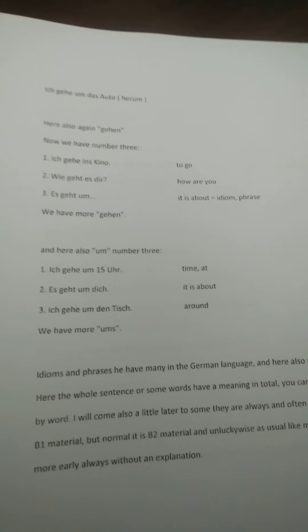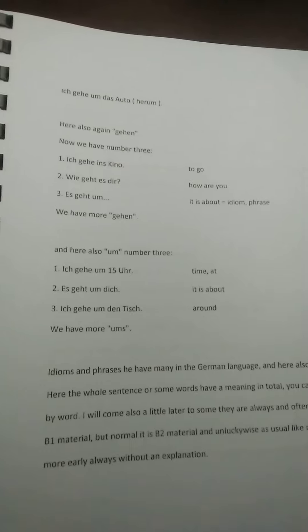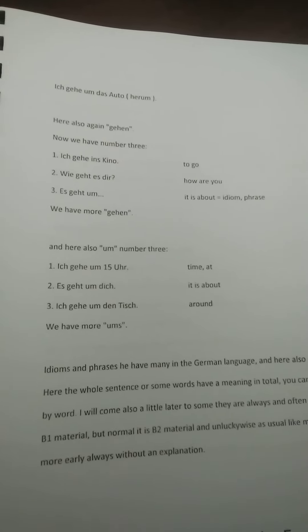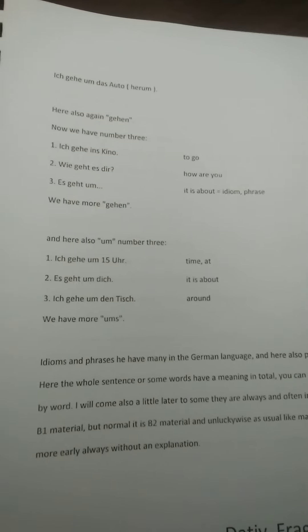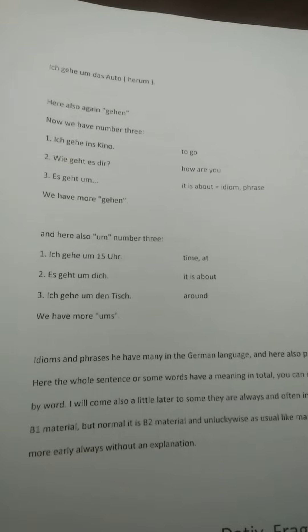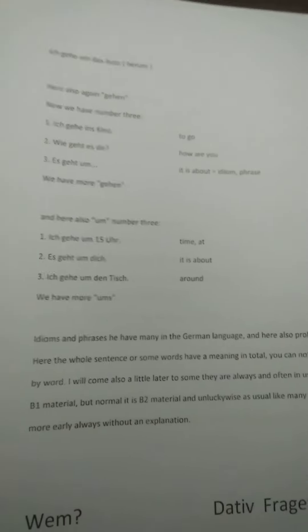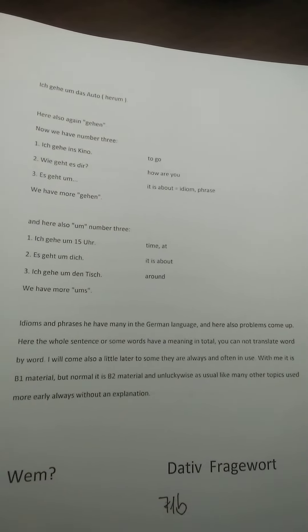Es geht um Anna, es geht um Peter, es geht um Klaus — 'it's about' as an expression. Number 3: ich gehe um den Tisch — here 'um' is a Präposition meaning 'around'. There are more uses of 'um'; I'll come to the others later, step by step.